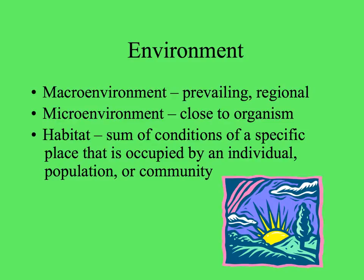When we talk about the environment of a plant, we can refer to a number of different things. The macro environment is the larger scale. The micro environment is that very close to the individual organism, as experienced at the borders of the organism. Habitat is a word we use to describe all the conditions of a particular place that an individual, a population, or a community lives in.